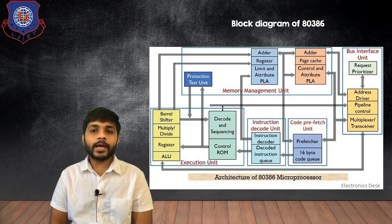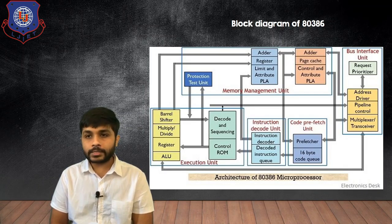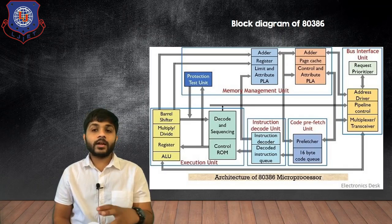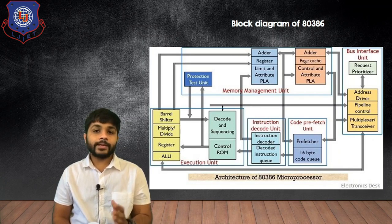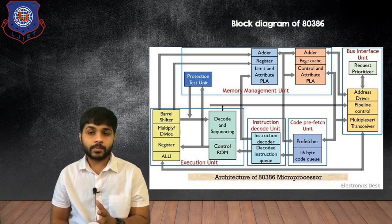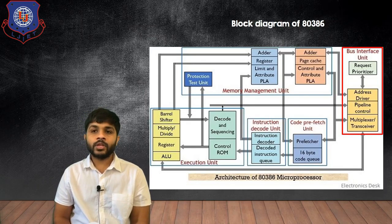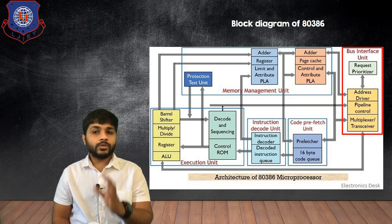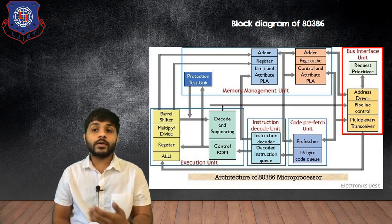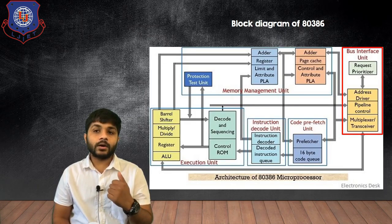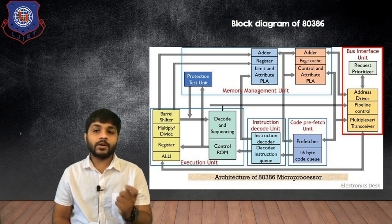Now let's move to the block diagram of the 80386. In the 80386 there are different sections available: there is a bus interface unit, a code prefetch unit, instruction decode unit, execution unit, and the memory management unit. The first block is the bus interface unit — using this block the bus is interfaced with the memory or the input/output device. In the bus interface unit there are different blocks such as the request prioritizer, address driver, pipeline control, and the multiplexer trans receiver.